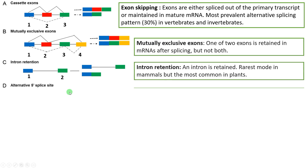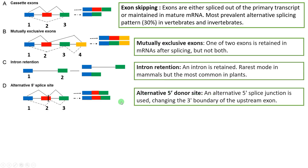The fourth type is called alternative 5' splice site. Here, an alternative 5' splice site junction is used, changing the boundary of the upstream exon. The normal splicing site occurs at one position on the upstream exon, but with this alternative, the 3' boundary of the upstream exon shifts to a different position. The result is a junction spliced at a different site, altering the length of that exon.